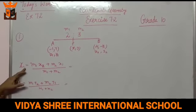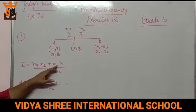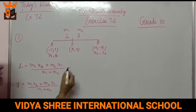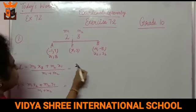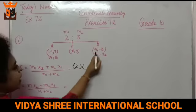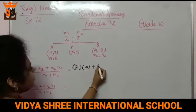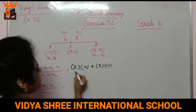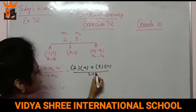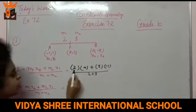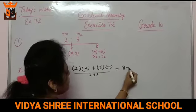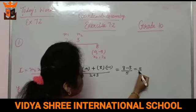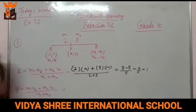Formula me abhi aapko bataya tha: x ka = M1·x2 plus M2·x1 upon M1 plus M2. Toh dekhiye M1 ki value hai 2, x2 ki value hai 4, plus M2 ki value hai 3, x1 ki value hai minus 1. Aur niche M1 plus M2 means 2 plus 3. So 2×4 = 8, minus 3×1 = 3, upon 5. This is 5 upon 5. Cut ke answer kitna aaya? 1.